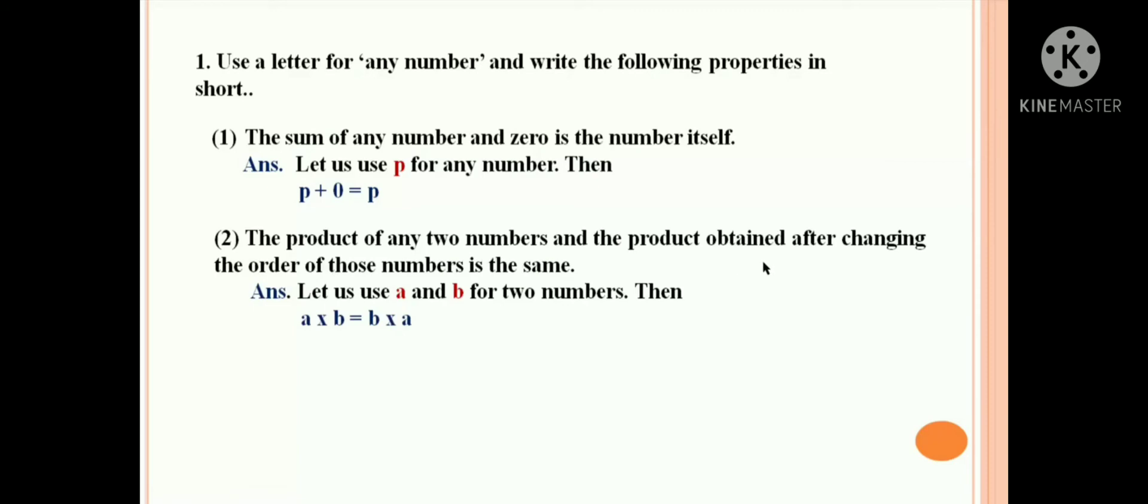The second question: the product of any two numbers and the product obtained after changing the order of those numbers is the same. Let us use A and B for two numbers. Then A into B is equal to B into A, because either side, whenever you multiply, your answer should be the same.